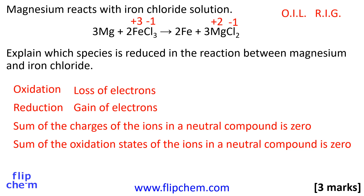The oxidation state of iron in FeCl₃ is +3. The oxidation state of chlorine in FeCl₃ is −1. The oxidation state of magnesium in MgCl₂ is +2, and the oxidation state of chlorine in MgCl₂ is −1.